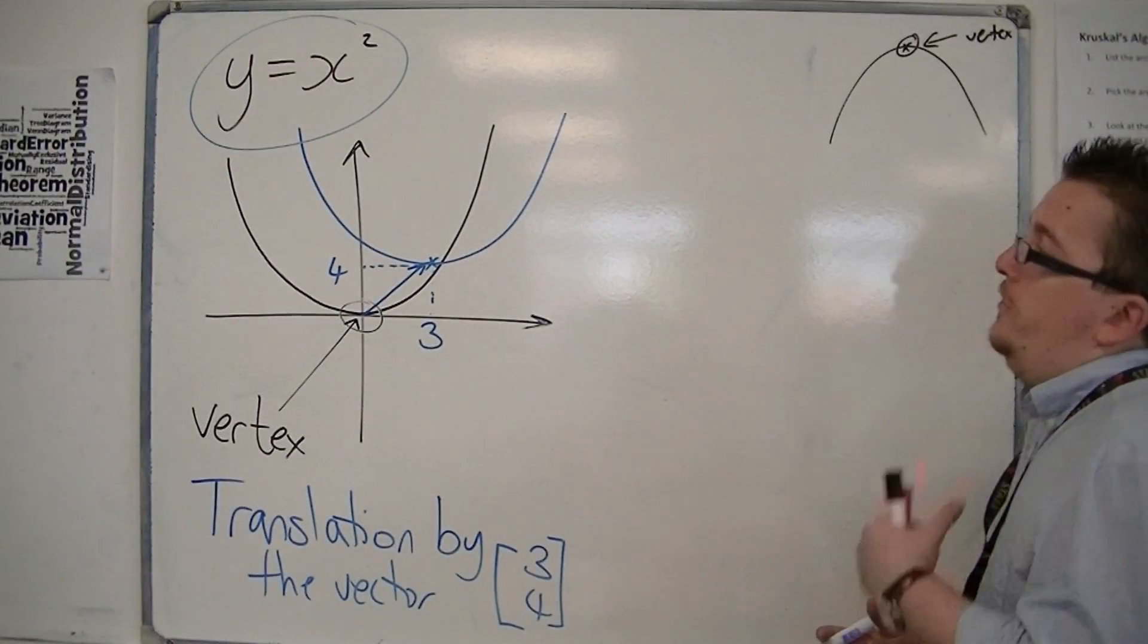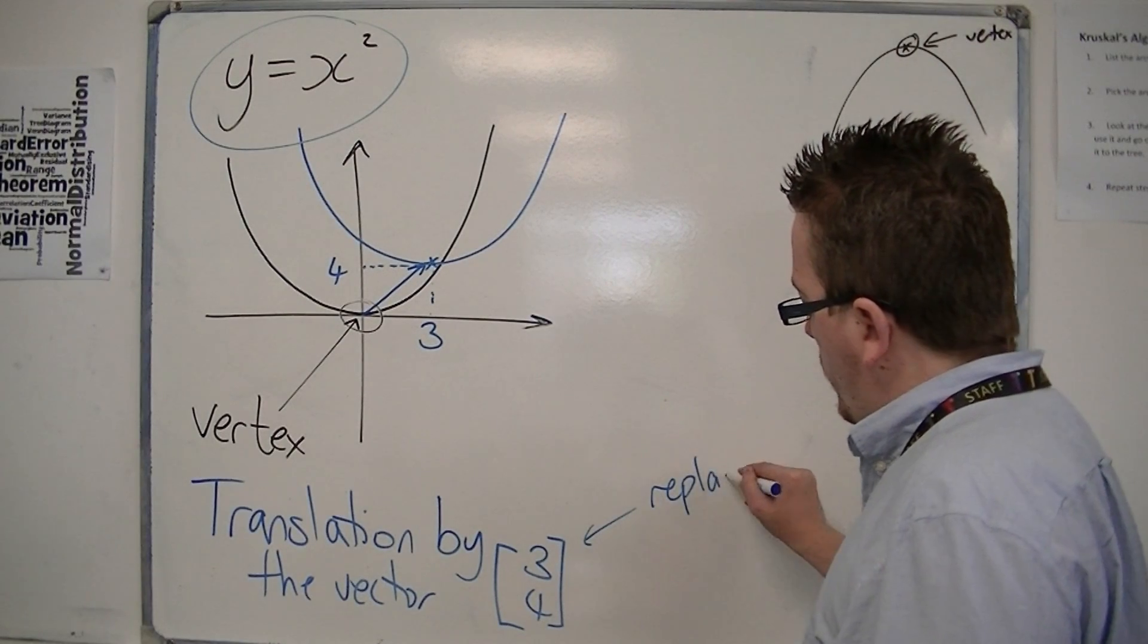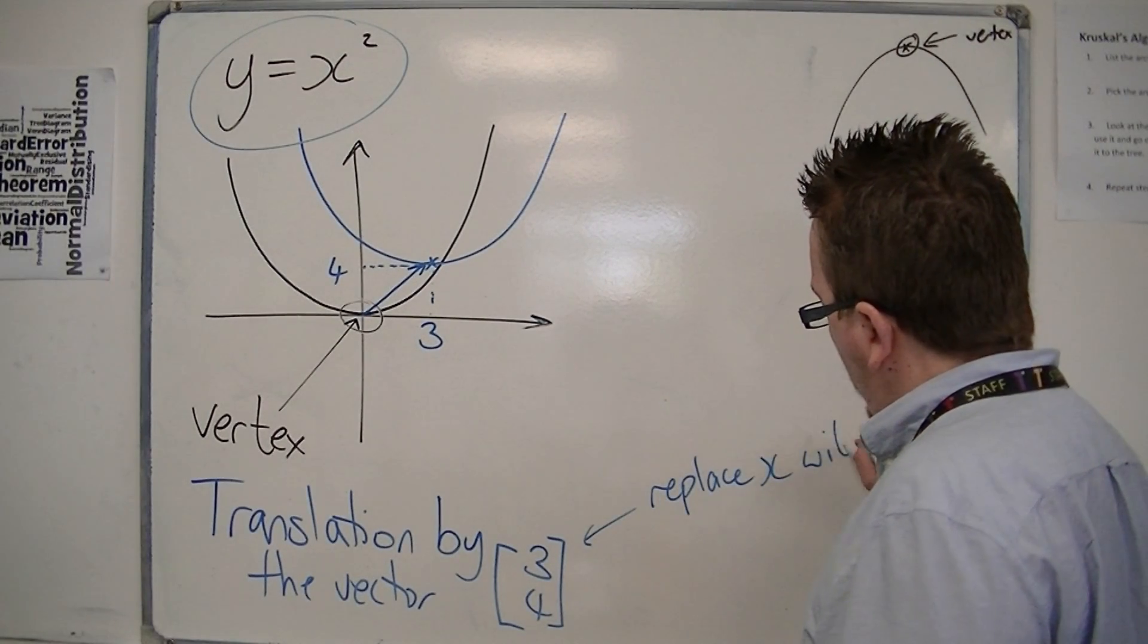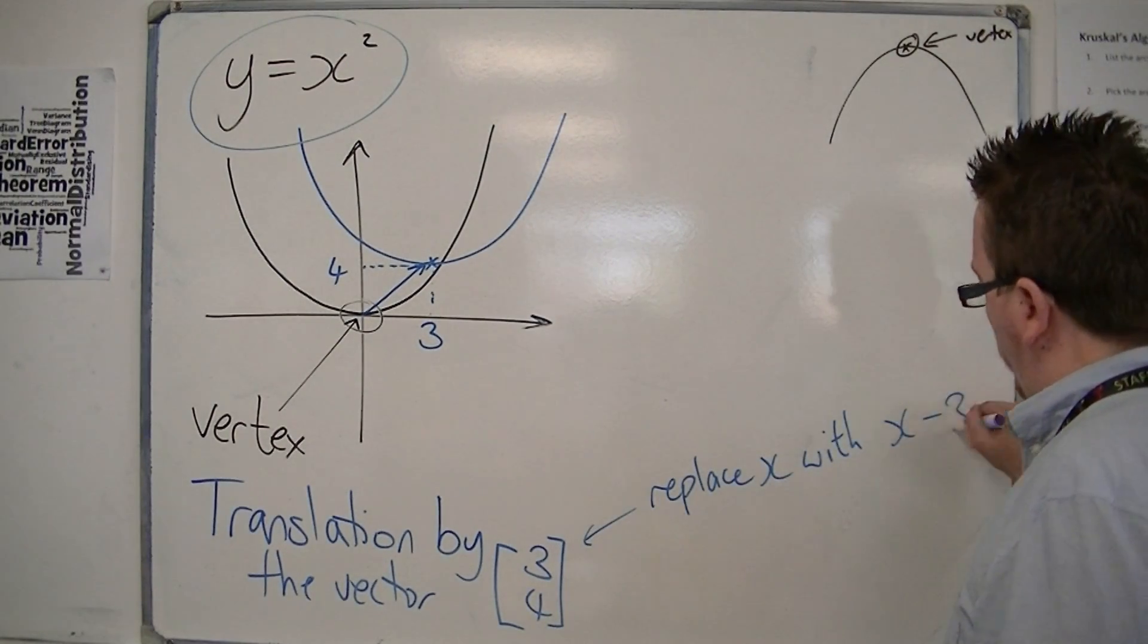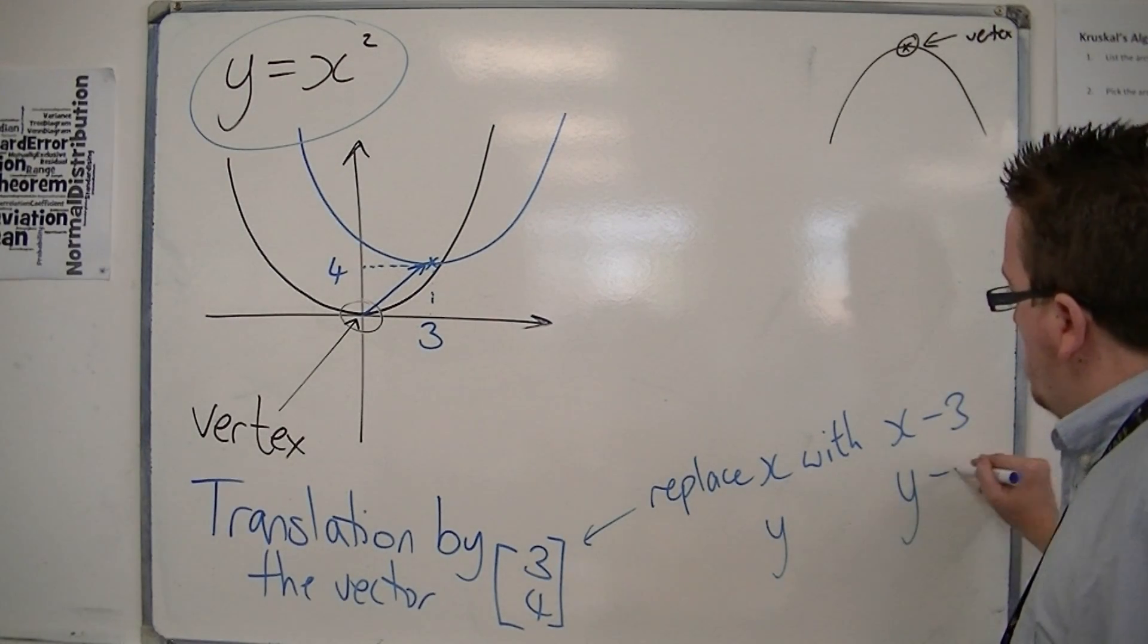And what you do is you replace the x in the equation with x minus 3 and replace the y with y minus 4.